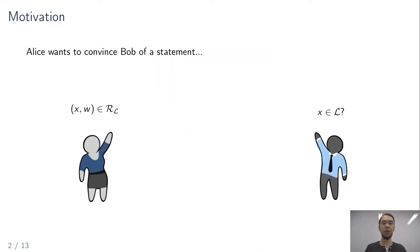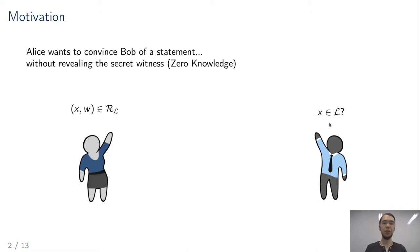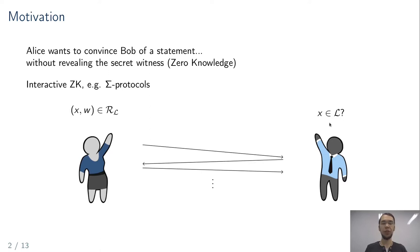Let me start by briefly recalling the setup for interactive proofs. We have Alice who wants to convince Bob of a statement, and Alice knows a witness but she doesn't want to reveal it, so she requires a zero-knowledge proof. Interactive proofs are often computationally very efficient and well understood, but they have the disadvantage that Alice and Bob have to exchange multiple messages, so latency is a major drawback and both parties have to be present throughout the whole protocol, since these protocols generally aren't transferable.